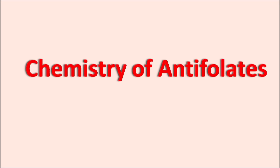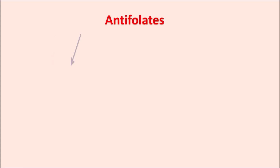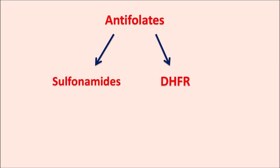Hi everyone. Today in this video let us discuss about the chemistry of antifolates. Antifolates can be classified into two types: sulphonamides as well as the dihydrofolate reductase inhibitors. Even sulphonamides are considered as type 1 antifolates, but still the dihydrofolate reductase inhibitors are the main category of drugs which are considered as antifolates. So today in this video let us discuss about the chemistry of these dihydrofolate reductase inhibitors.